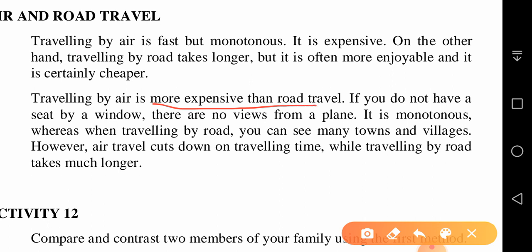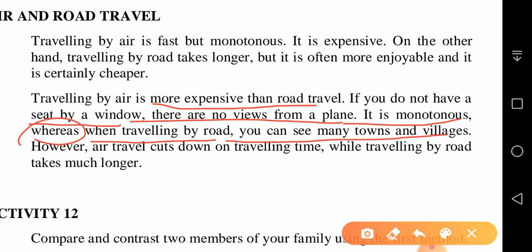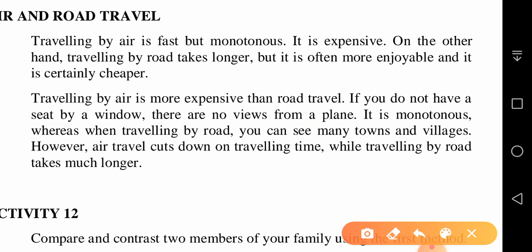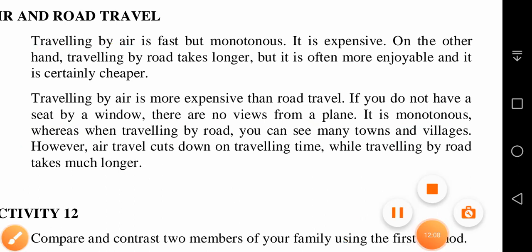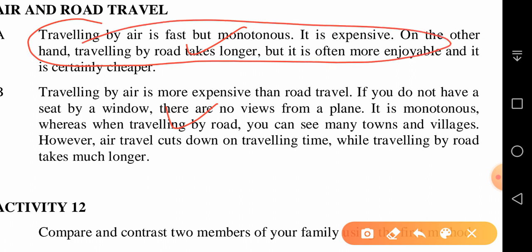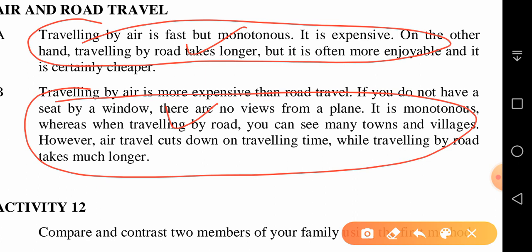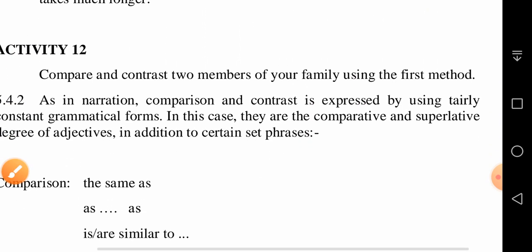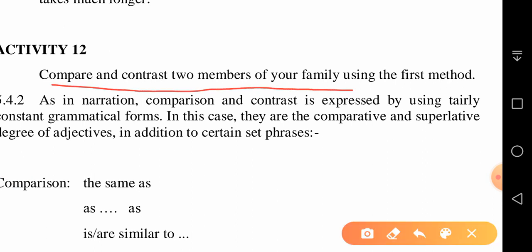In Pattern 2, both things are compared side by side: 'Traveling by air is more expensive than road travel. If you do not have a window seat there are no views from a plane — it is monotonous — whereas when traveling by road you can see many towns and villages. However, air travel cuts down on traveling time while traveling by road takes much longer.' Both paragraphs are examples of expository writing using comparison and contrast.